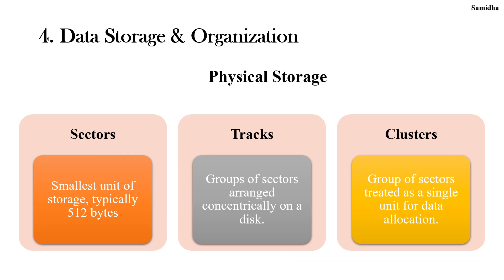Next is data storage and organization. From our previous video on computer architecture, we learned about components of a hard disk: sector, track and cluster. A sector is the smallest unit of storage on a hard drive, with a fixed size of 512 bytes. A track is a concentric circular ring on the surface of a hard disk, comprised of a group of sectors. A cluster is also a group of sectors and is known as a single unit of data allocation.